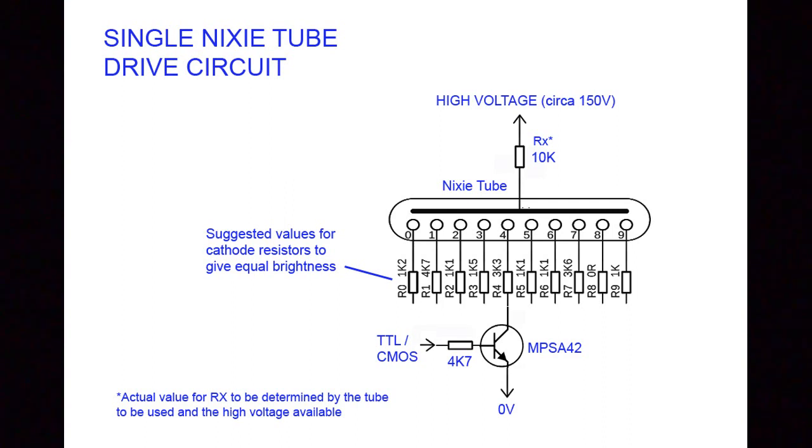Note in this circuit, the resistors have to be chosen to give equal brightness for each of the digits or symbols. The suggested resistor values here should work with most Nixie tubes.